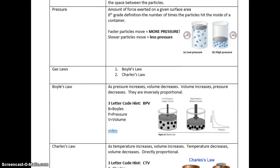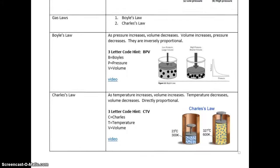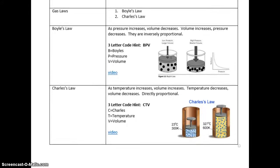That leads us to our two main gas laws: Boyle's Law and Charles' Law. Boyle's Law states that as the pressure increases, the volume will actually decrease — or volume increases and the pressure decreases. They're inversely proportional, meaning one goes up, the other goes down. One way to remember Boyle's Law is the three-letter code BPV: B stands for Boyle's, P stands for pressure, V stands for volume — assuming our temperature is constant.